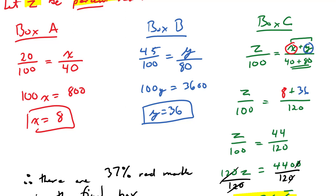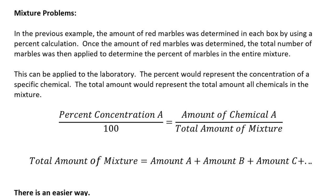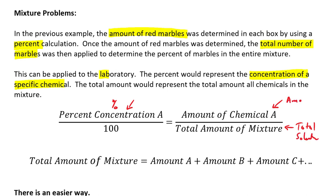We used our knowledge of systems of linear equations to solve this. By understanding a few special formulas from the laboratory, we can speed this up greatly. For percent concentration: the percentage equals the amount of chemical divided by the total amount of mixture. For example, if I have 50 grams of chemical in 100 grams of total solution, that's a 50% weight-by-weight solution.